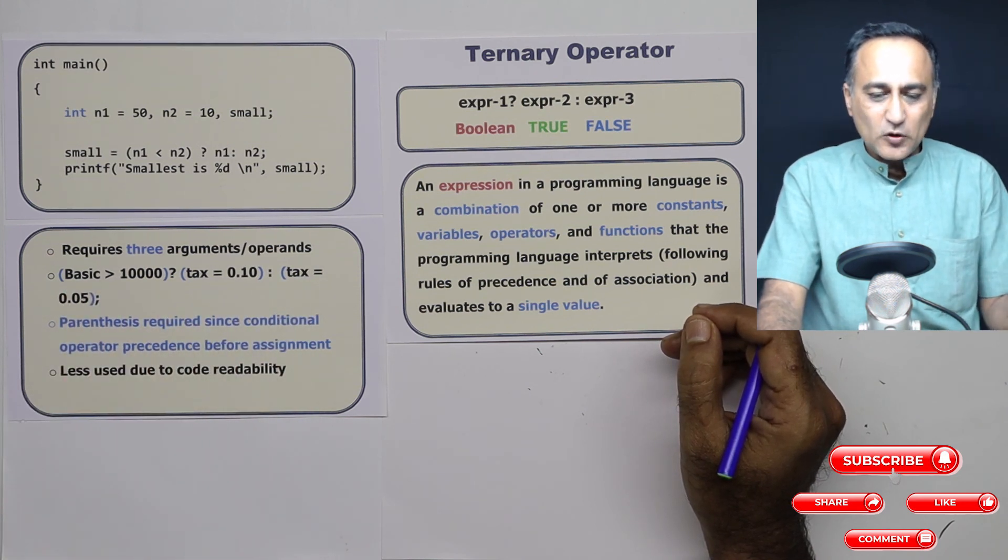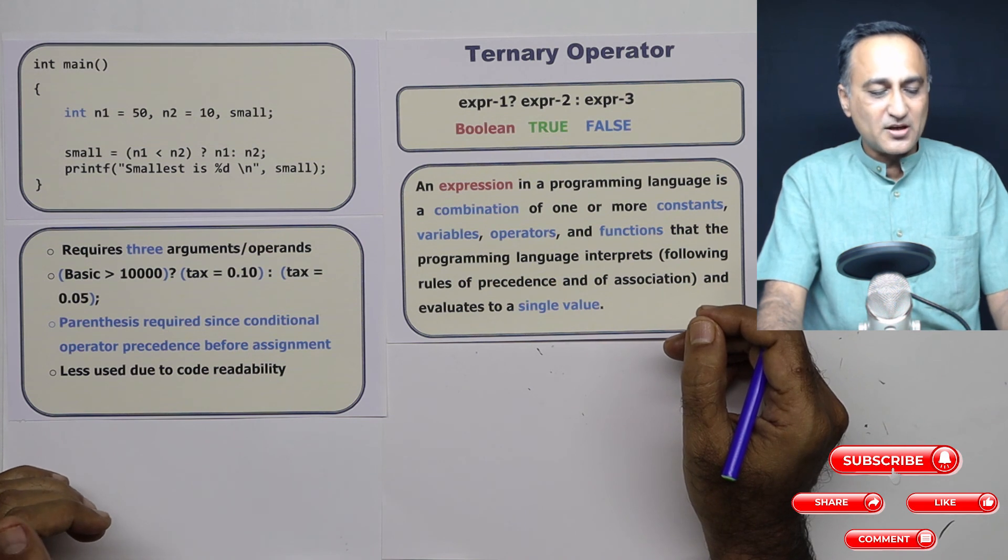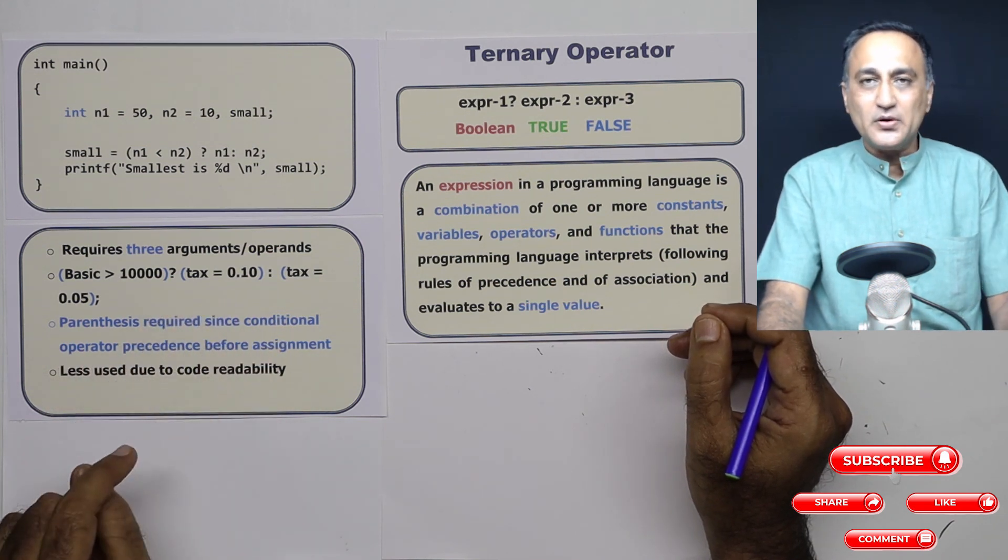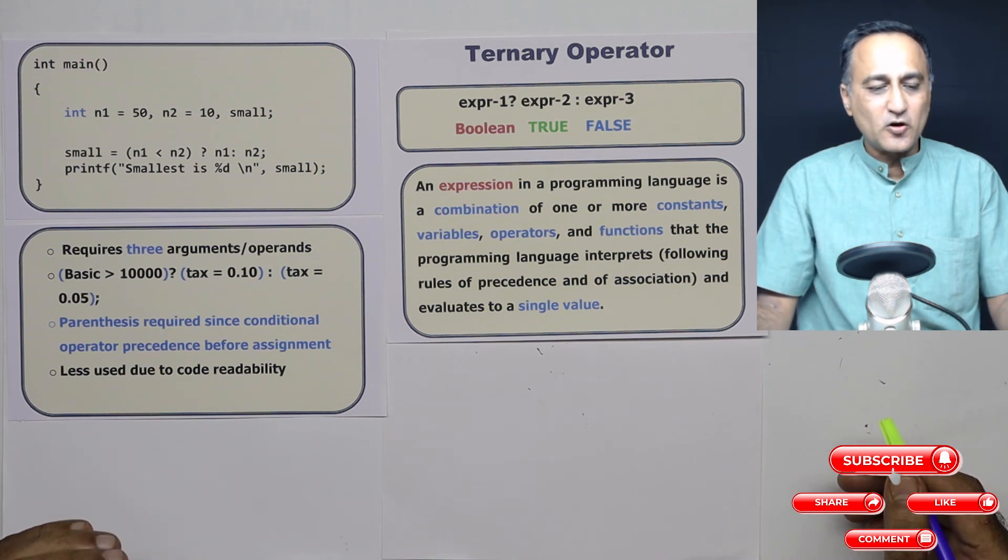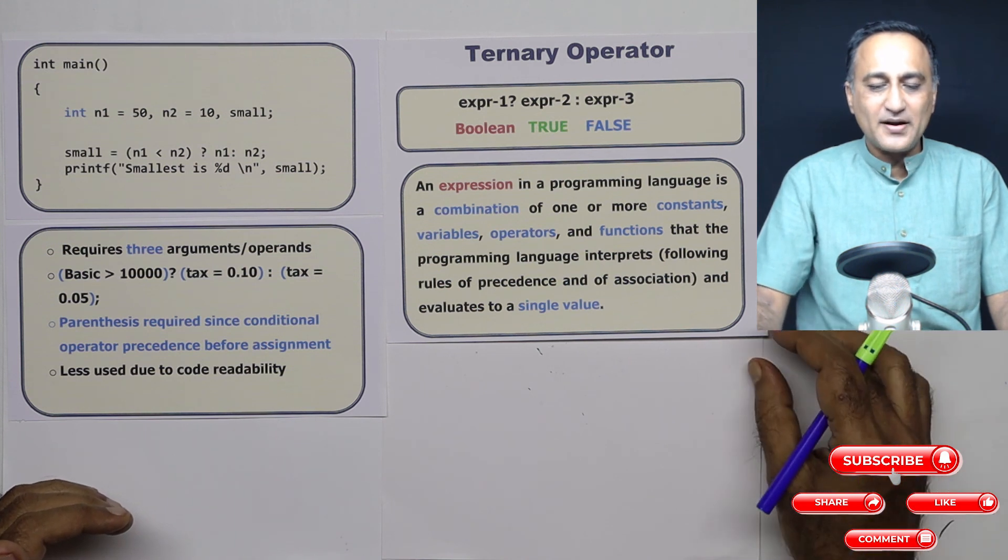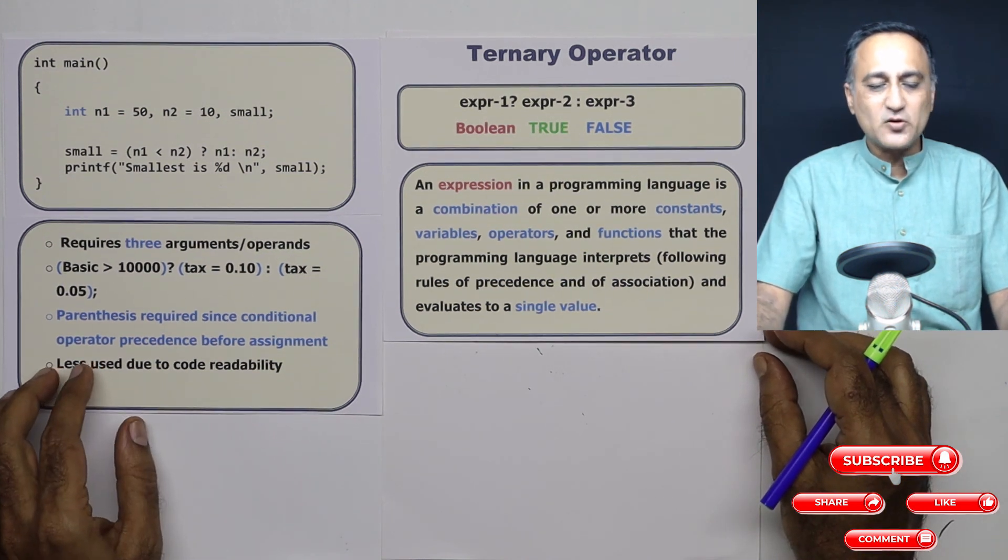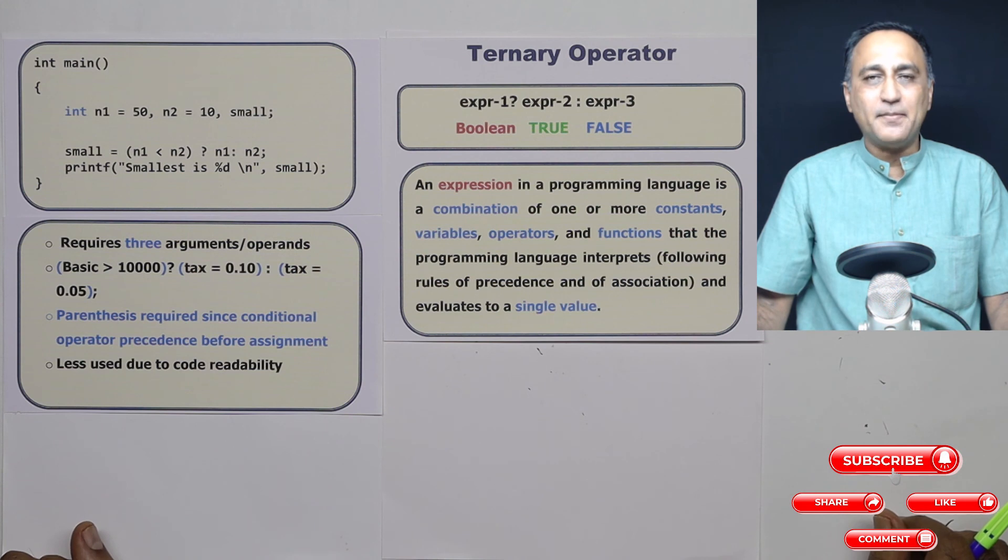Now this is not very commonly used, the reason being that it makes the code difficult to read or maintain for the end user. That's why ternary operator conceptually is important to understand, but it is not very widely used. The reason being it makes code hard to read and maintain.